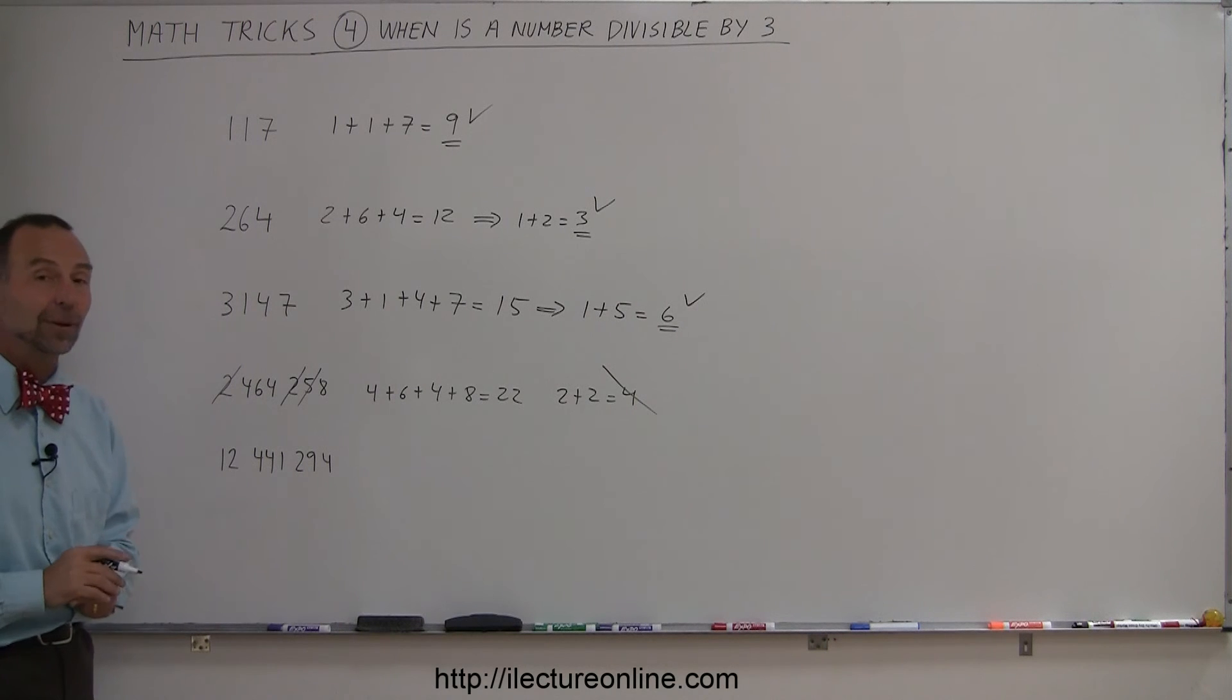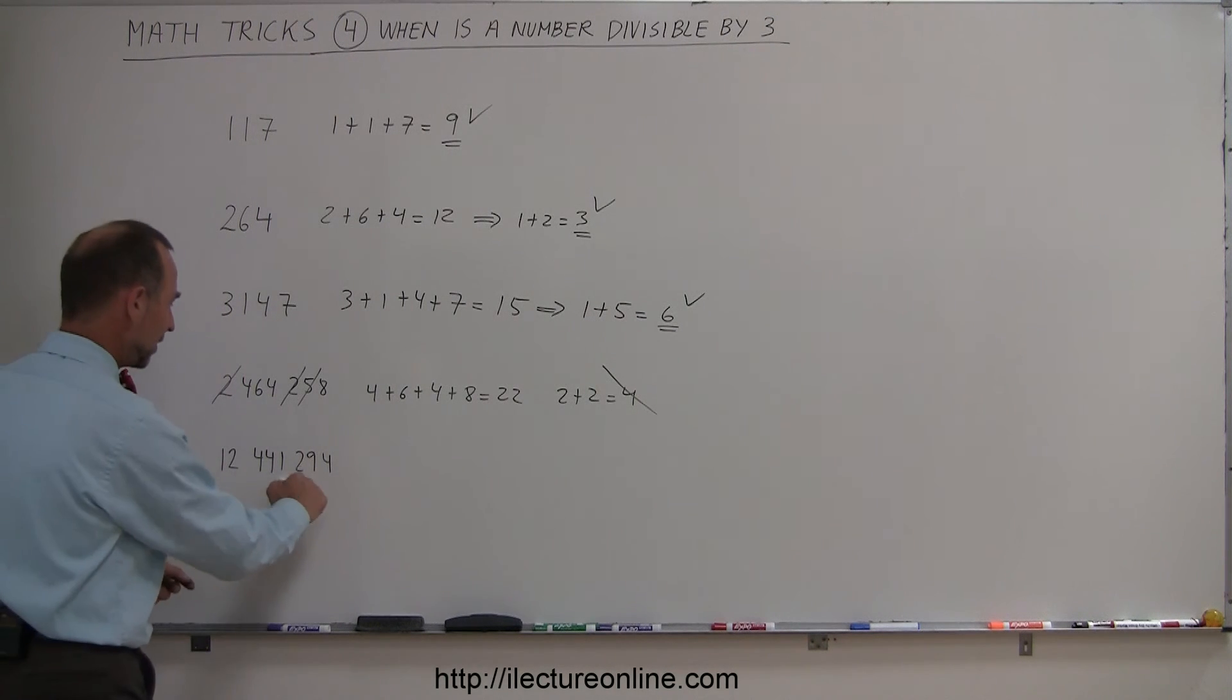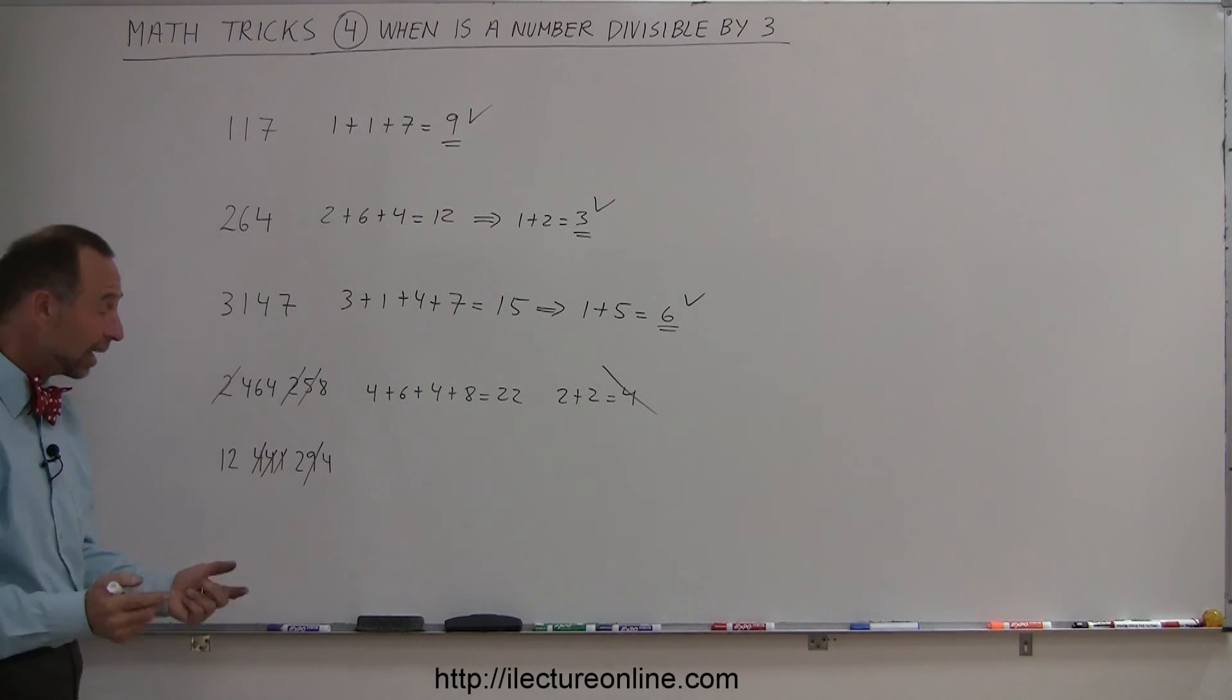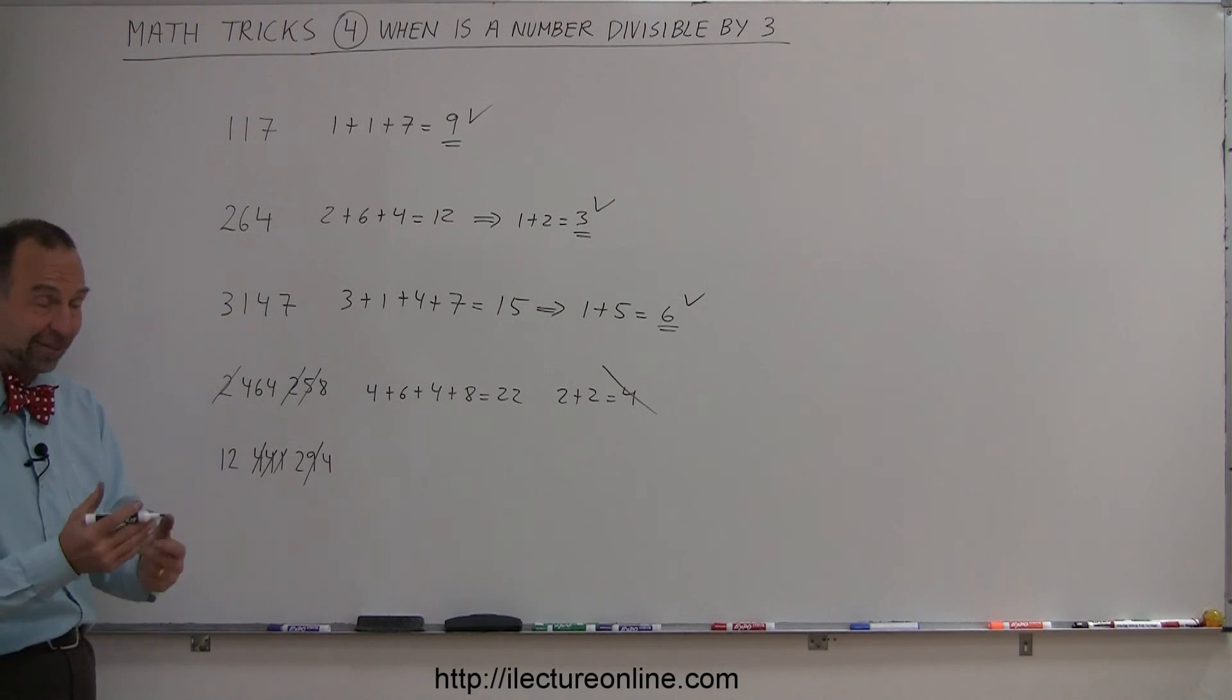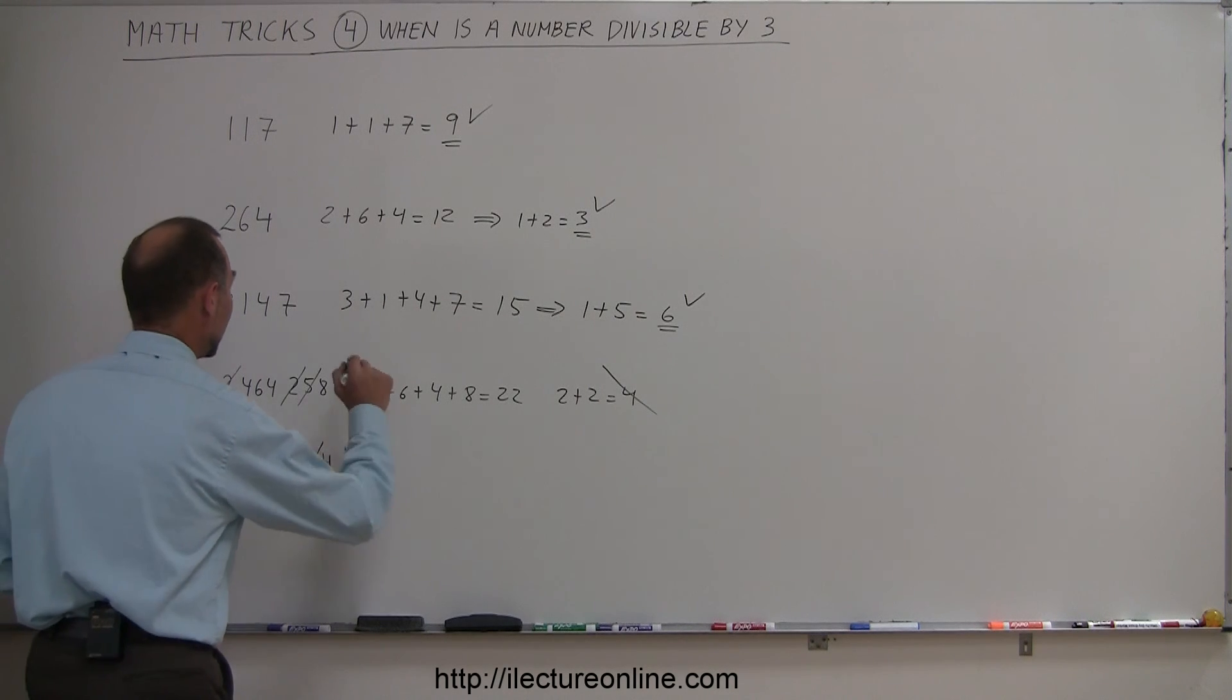All right, let's try this last one. Again, any time numbers add up to 9, we can get rid of those. Here we have a 9, so get rid of the 9. 4 plus 4 plus 1, that's 9, get rid of that. What do we have left? 4 plus 2 is 6, plus 2 is 8, plus 1 is 9. That adds up to 9. So therefore, yes, this number is divisible by 3.